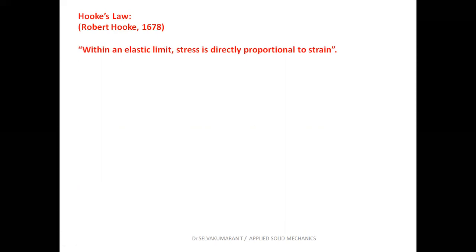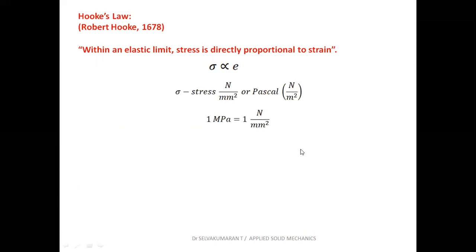Let us denote stress by sigma and strain by the small English alphabet e. Stress is directly proportional to strain. Stress can be expressed in units of Newton per mm squared or Pascal, i.e., Newton per meter squared. Units are very important for engineers. Strain is represented by small letter e, which is a dimensionless parameter having no unit.